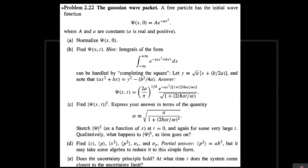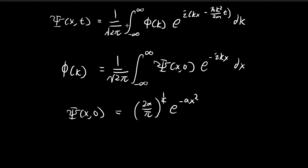Now let's solve part b. In part b we want to find the wave function. We know that the wave function is going to come in a specific form, and in order to arrive at our wave function we need to find φ(k). To find φ(k) we need to go through the Fourier transform integral. We're going to substitute our initial wave function into this integral to find φ(k), and then substitute φ(k) into the wave function integral.